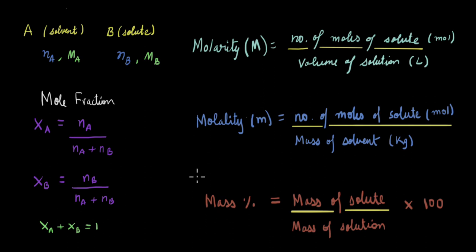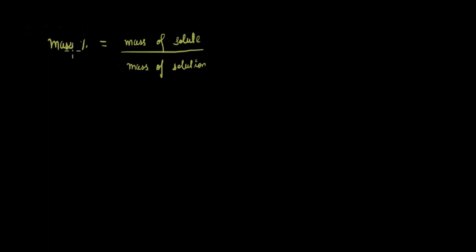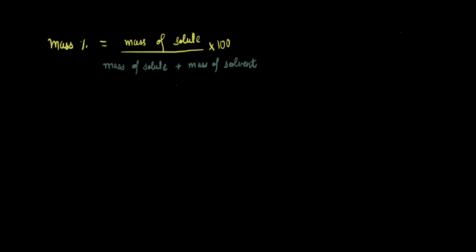Sometimes in calculations it becomes easier if we know a direct relationship between any two of these terms. One very common usage is expressing mass percent in terms of the mole fractions of the solute and the solvent. Let's take that as an example. We start with the definition of mass percent: mass of solute divided by mass of solution times 100. Since a solution has two components, a solute and a solvent, we can write the denominator as mass of solute plus mass of solvent.